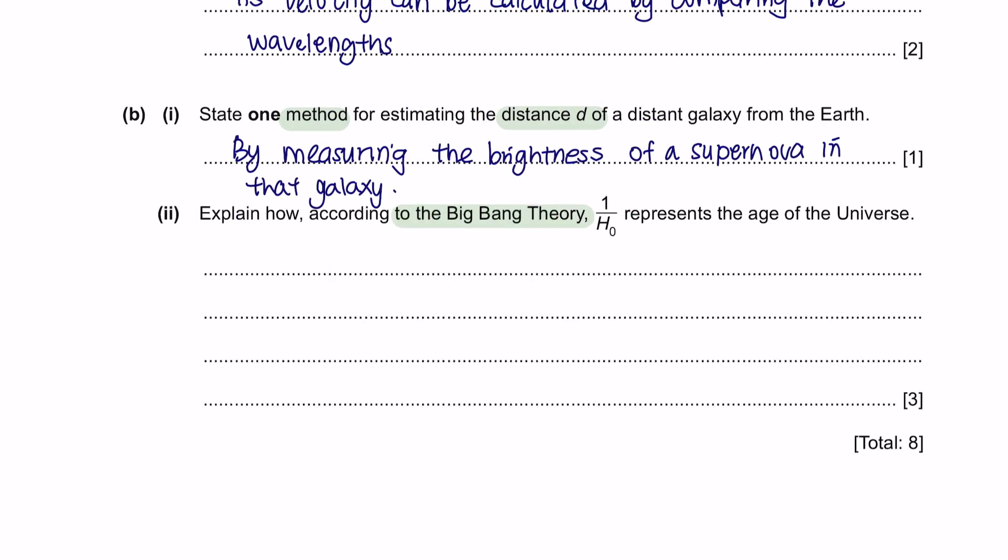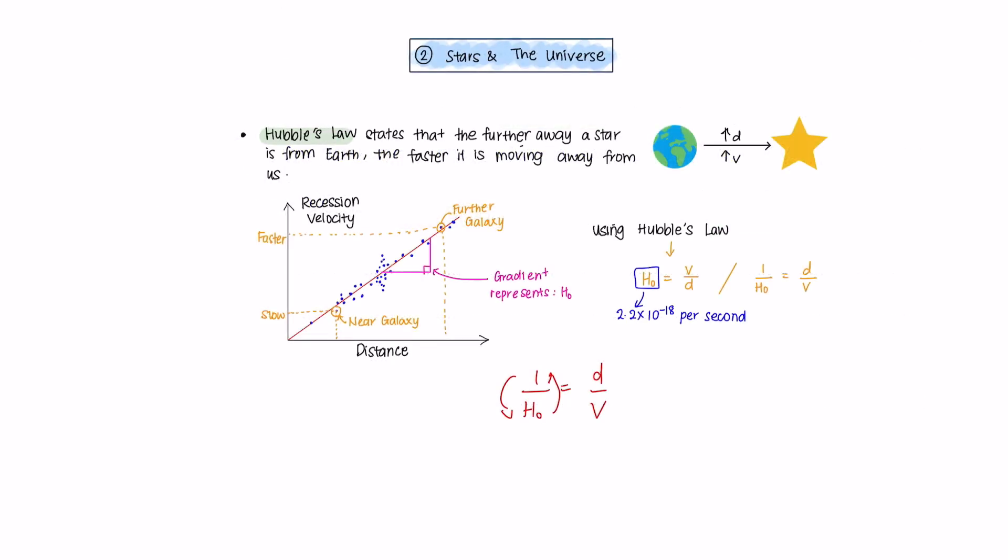Question B Part 1. State one method for estimating the distance d of a distant galaxy from the Earth. For measuring far away galaxy's distance, it can be determined by using the brightness of a supernova in that galaxy. Part 2. Explain how, according to the Big Bang theory, 1 over H0 (H0 being the Hubble constant) represents the age of the universe. H0 is Hubble's law and states that the further away a star is from Earth, the faster it is moving away. According to Big Bang theory, all galaxies originated from one point in space and time.